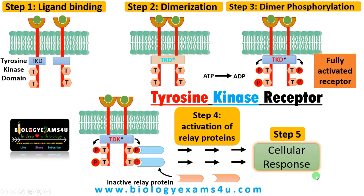This signaling cascade finally causes the activation of a target molecule that leads to a change in gene expression, resulting in a cellular response. The target molecule is often a transcription factor that can directly bind to DNA and cause gene expression, thereby changing cellular function — such as cell division, cell differentiation, or cell growth.